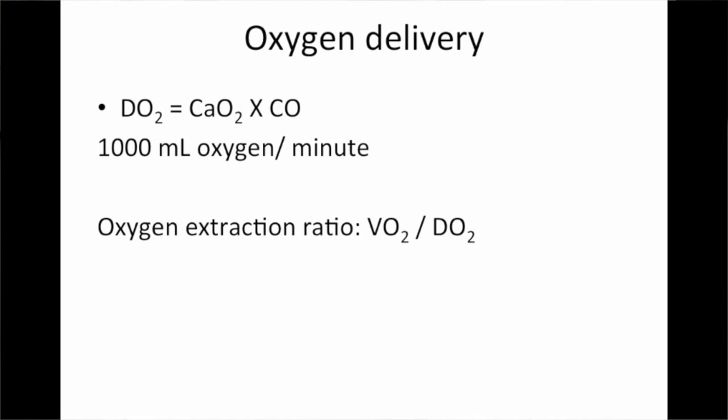This leads to the oxygen extraction ratio: VO2 divided by DO2 — of all the oxygen delivered, how much is consumed? The normal value is between 25 and 30 percent. This value increases in conditions like cardiogenic shock.